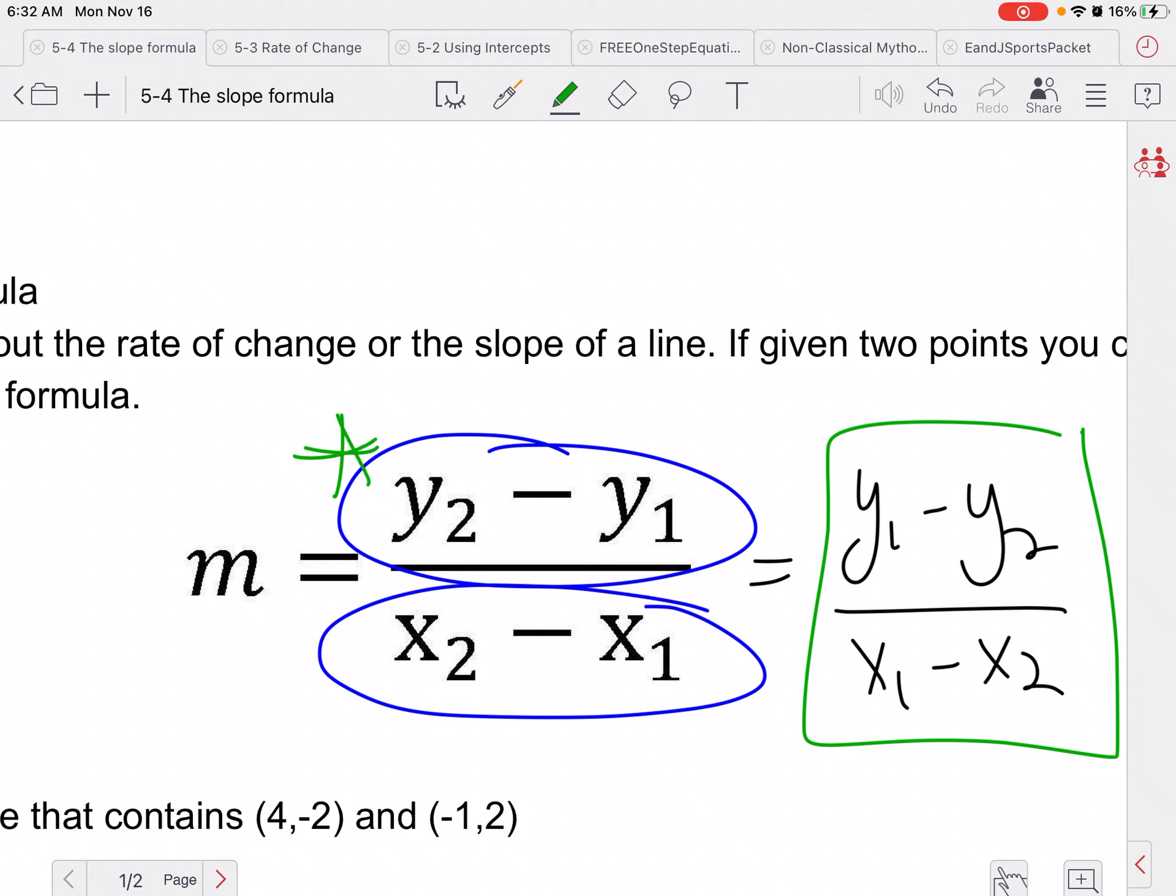Also, slope is m. Why they chose the letter m, I'm sure it's some weird Latin word, whatever. I know it seems like it should be s, but they use m. So m is equal to slope. Make sure that you know that. That's going to pop up a lot in this chapter and the rest of your math career. So m is slope. Remember that.